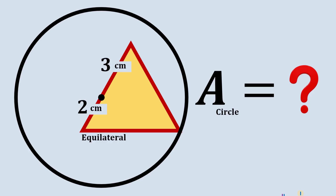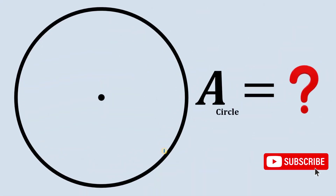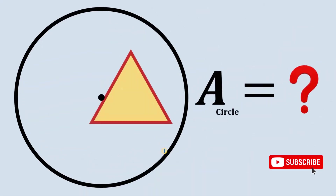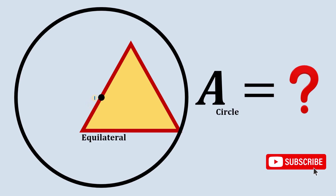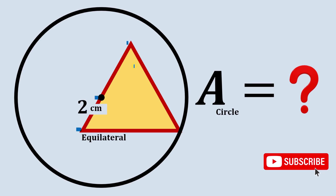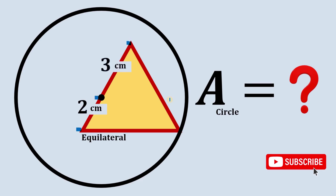Can you solve this geometry challenge? Here's the question. Given a circle, draw an equilateral triangle inside of it wherein one of its vertices is on the circumference of our circle, and this length is two centimeters and this length is three centimeters. The question is: what is the area of our circle?